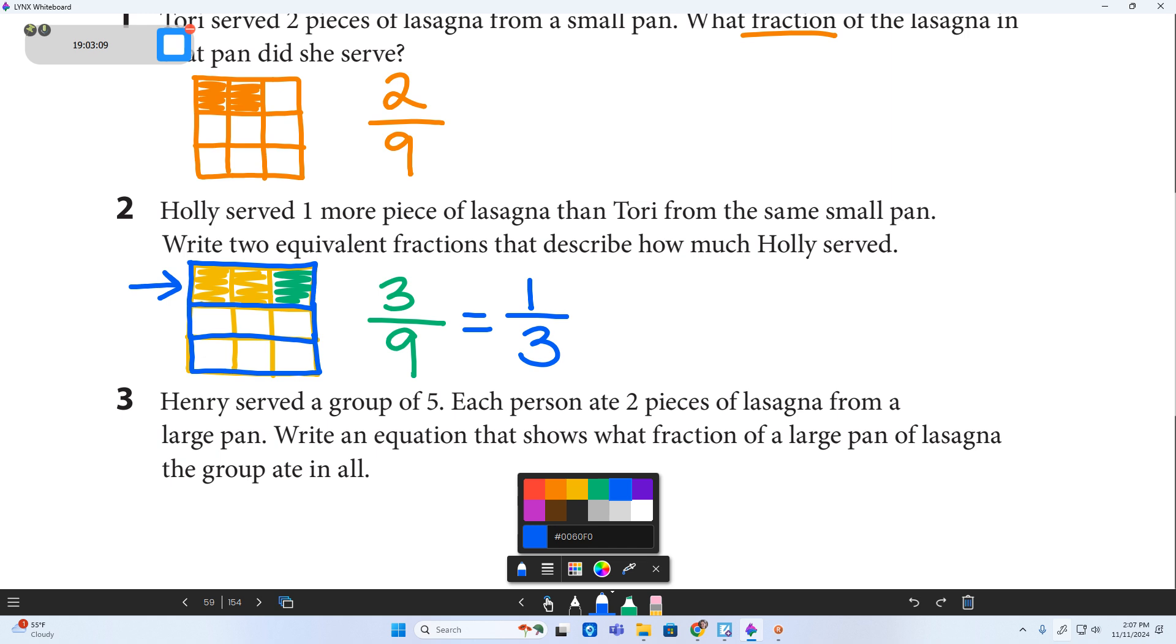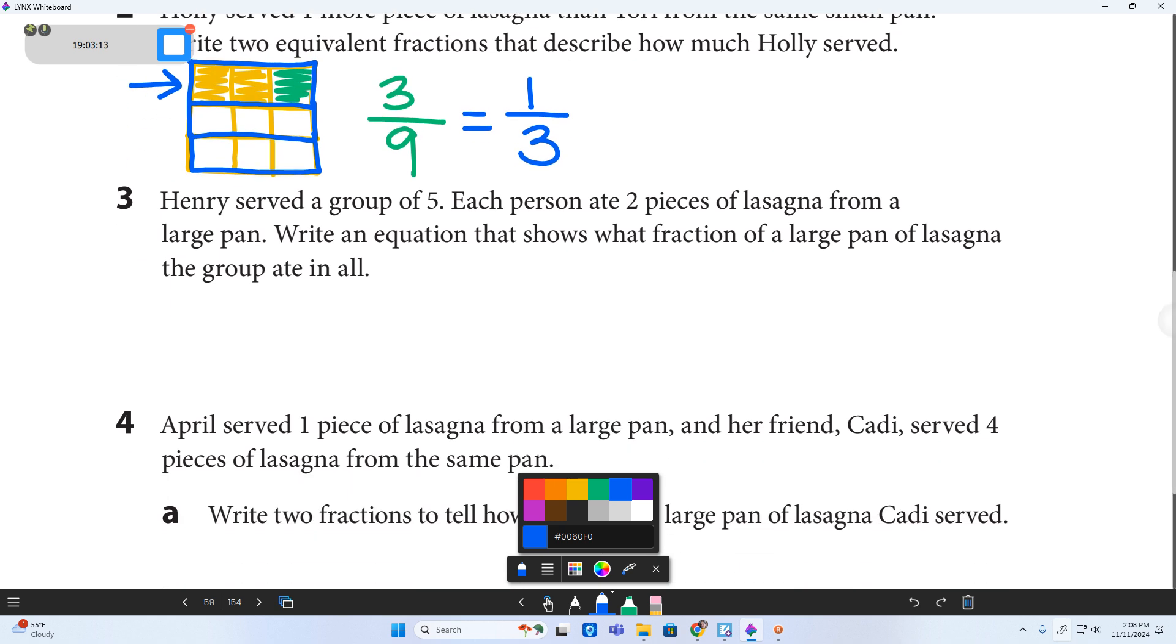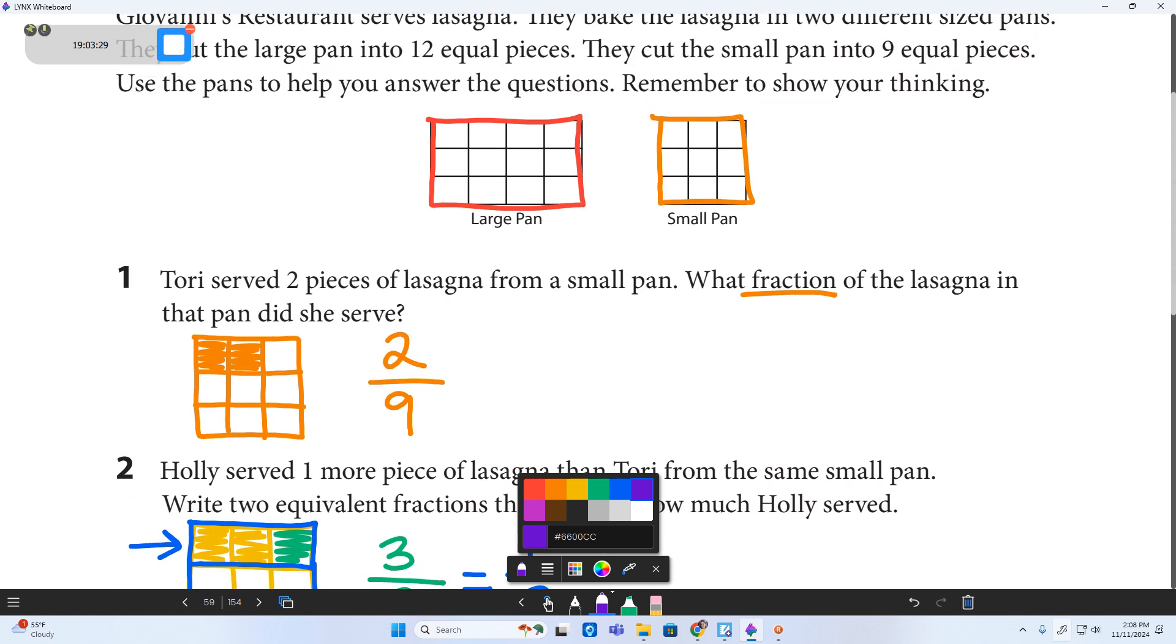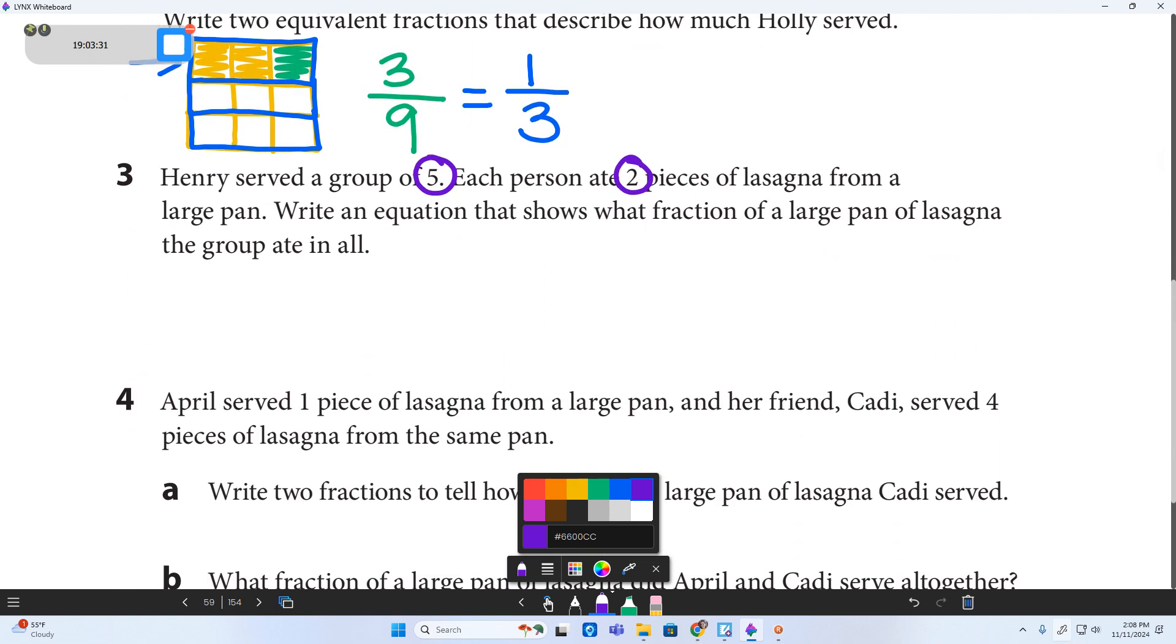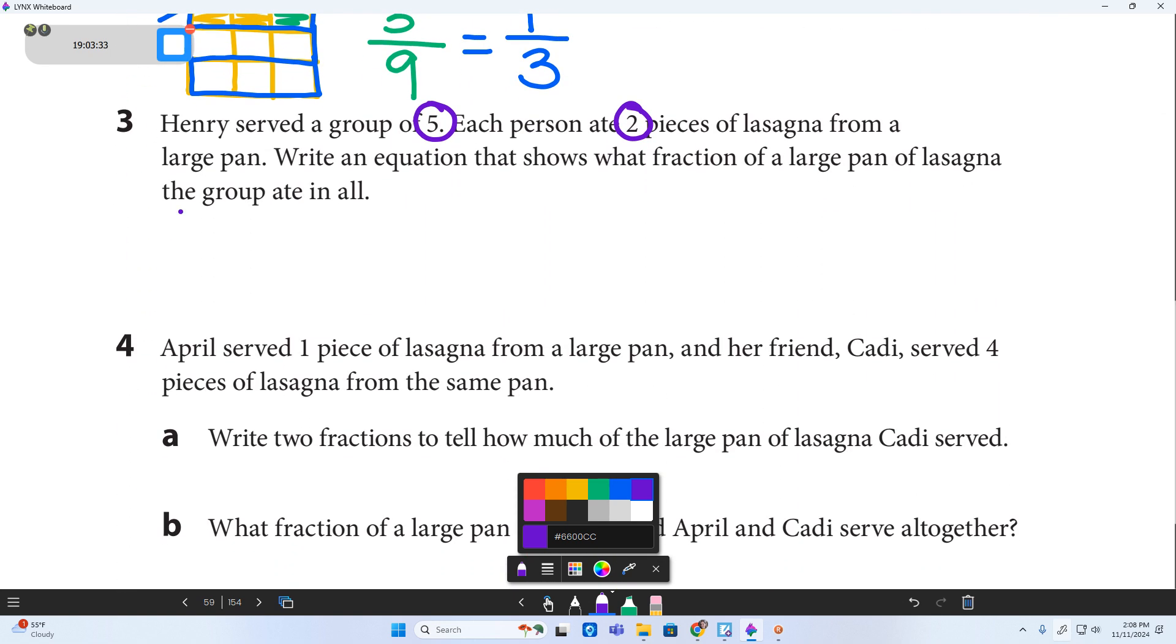Okay, number three. Henry served a group of five. Each person ate two pieces of lasagna from the large pan. Okay, five people times two pieces each. Five times two is ten. Excellent. So I'm going to go ahead and draw that big pan. What did that big pan look like? A three by four. Okay. So I'm going to go ahead and draw that large pan.